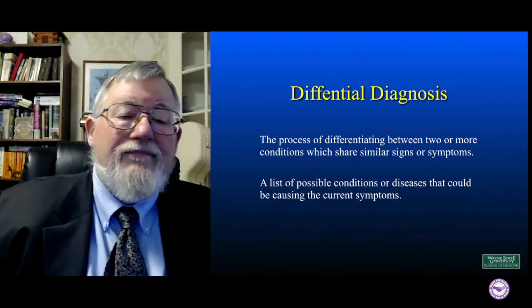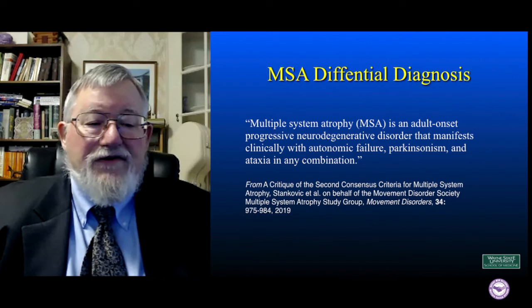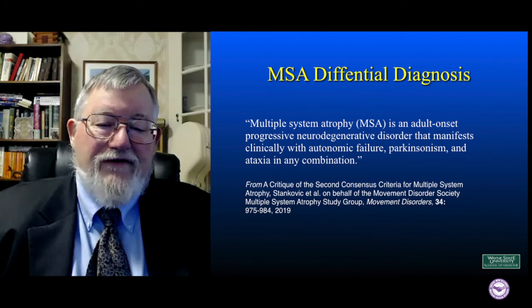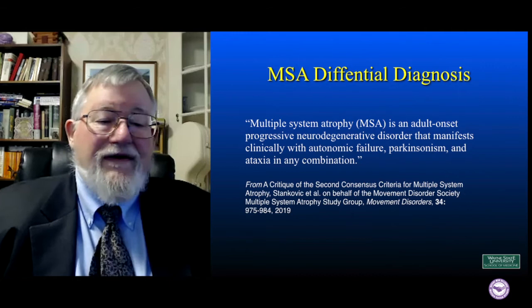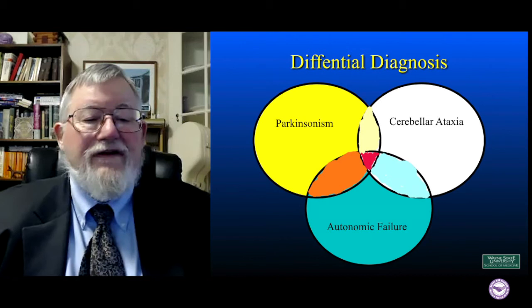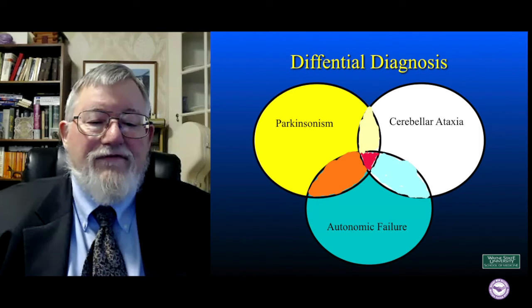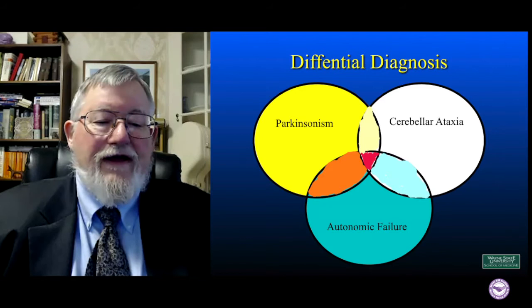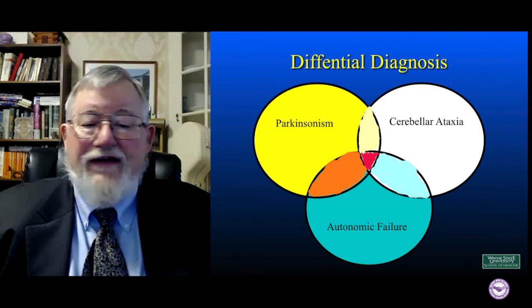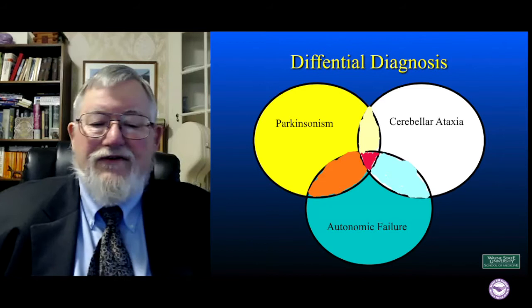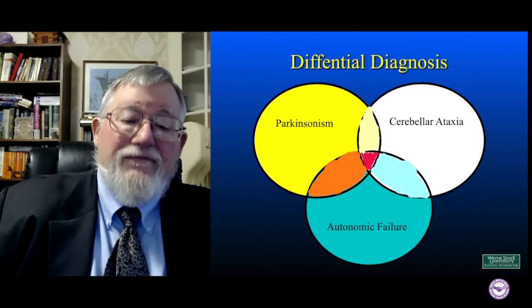Multiple system atrophy is an adult-onset progressive neurodegenerative disorder that manifests clinically with autonomic failure, Parkinsonism, and ataxia in any combination — and that's kind of the key here. I have this Venn diagram with Parkinsonism, cerebellar ataxia, and autonomic failure, and where they all overlap in the middle, you have a little red triangle. You would think that if you're in that red triangle, you must have multiple system atrophy, but it turns out we need specific parts of particularly autonomic failure, and it also runs afoul of some other diagnostic principles.